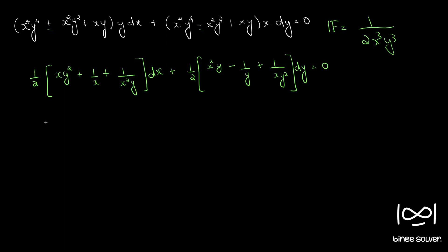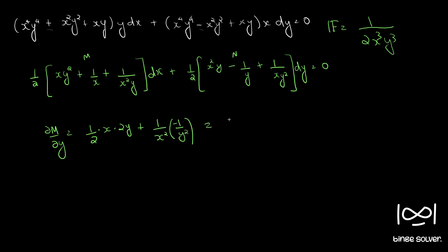Now this is our new M and this is our new N. Checking ∂M/∂y: we have 1/2 times d/dy of x·y² + 1/x + 1/(x²y), which gives 1/2 times (x·2y minus 1/(x²y²)), which equals xy minus 1/(2x²y²).